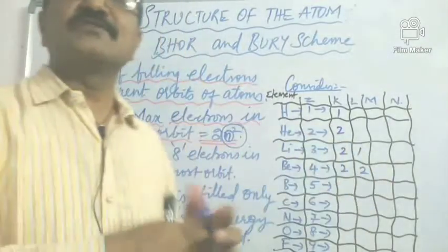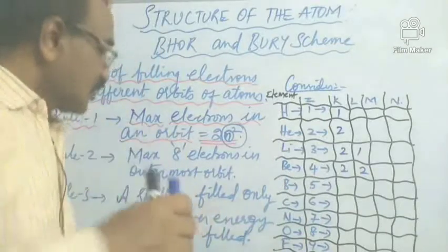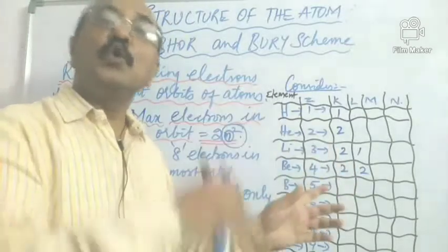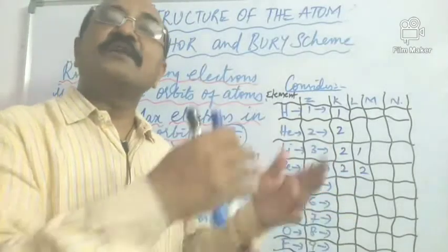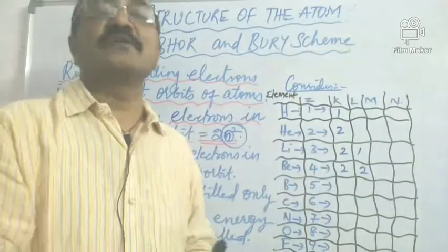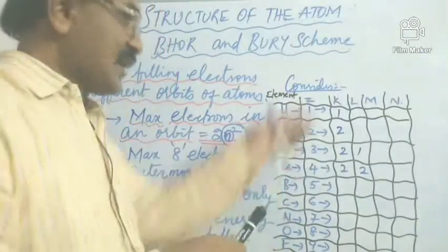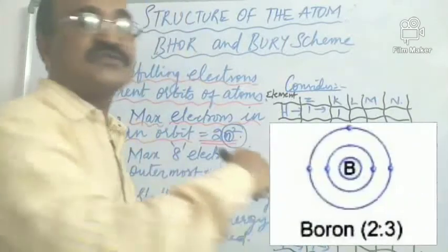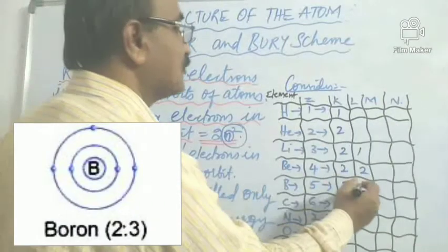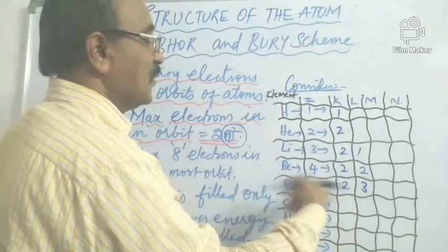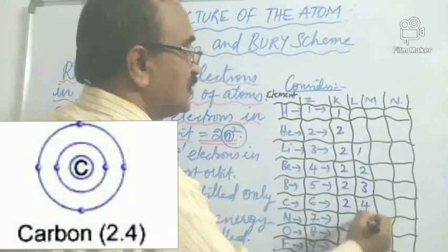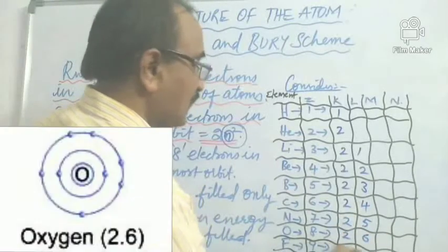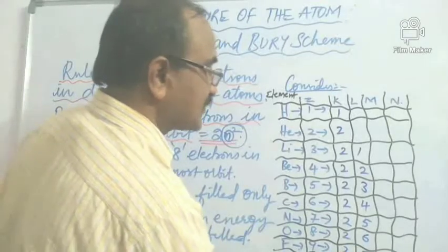The third rule states that unless the lower orbits are completely filled, the electrons cannot go into the next higher orbits. Boron has 5 electrons: 2 in the first orbit and 3 here, total 5. Carbon is 6: 2, 4. Nitrogen is 7: 2, 5. Oxygen is 2, 6. Fluorine is 2, 7. And neon is 2, 8.